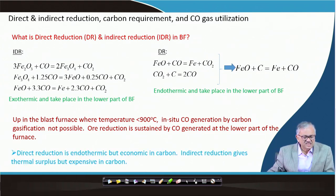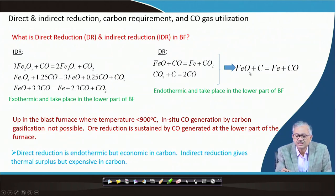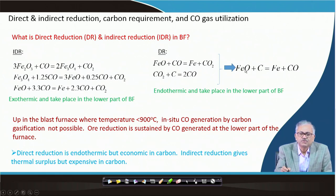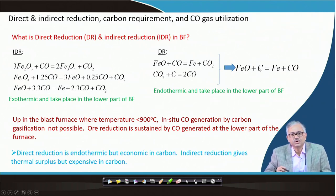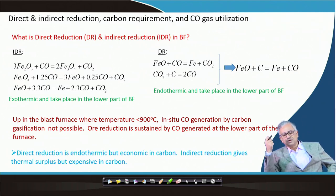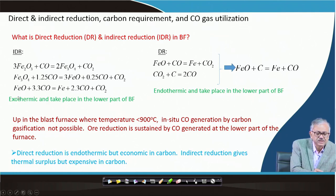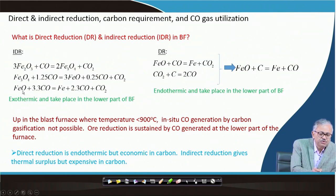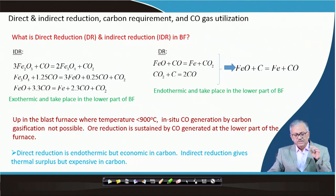Direct reduction is endothermic but economic in carbon. Direct reduction is economic because 1 mole of carbon can reduce 1 mole of iron — that is, 1 mole of carbon can take out 1 mole of ore oxygen. But in indirect reduction, considering FeO + 3CO → Fe, to remove 1 gram-atom of oxygen from the ore you require 3.3 times the CO, meaning 3.3 gram-atoms of carbon. So indirect reduction is very expensive in carbon.